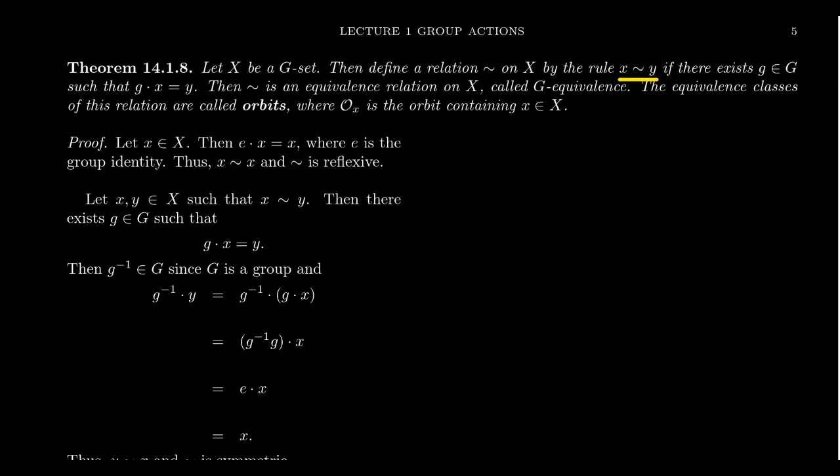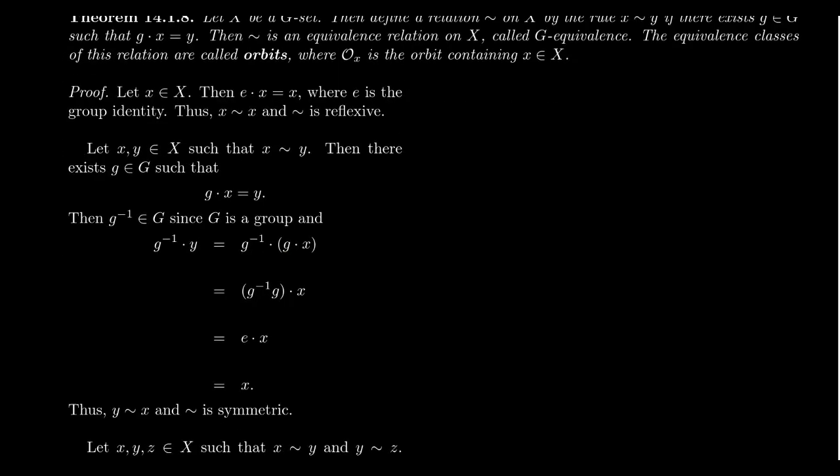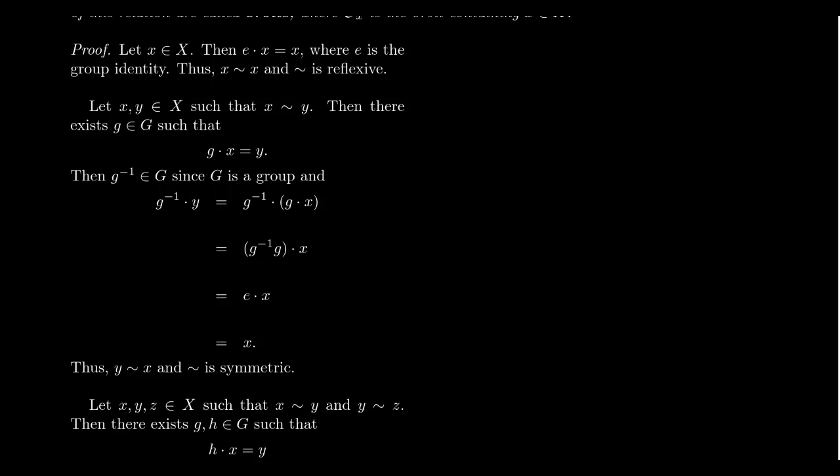Let's now check for symmetry. Let's take two elements inside the G-set X and Y such that X is related to Y. By definition of our relationship, there exists some group element g so that g acts upon X and produces Y. We then want to reverse this process. Since G is in fact a group, g inverse belongs to G and it can act upon any element of X. In particular, g inverse can act upon Y. By assumption, Y can be factored as g acting on X.